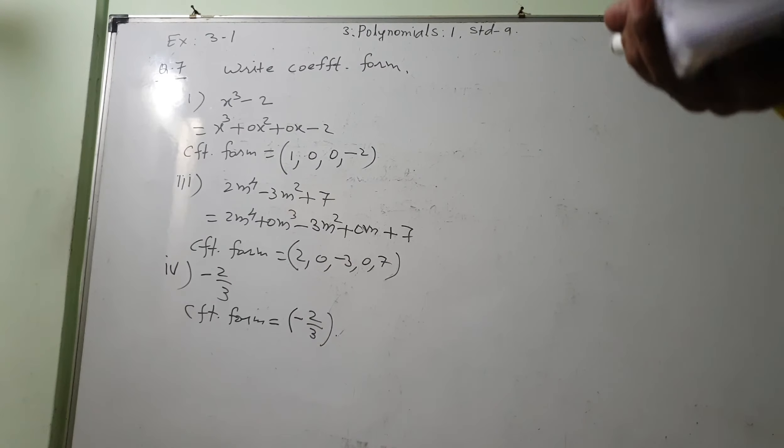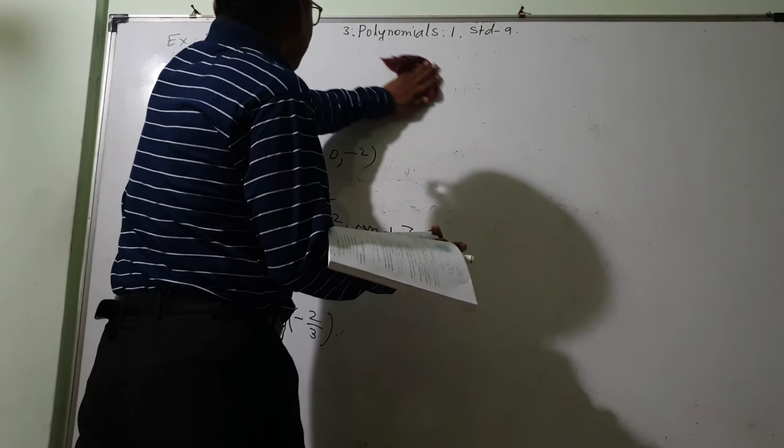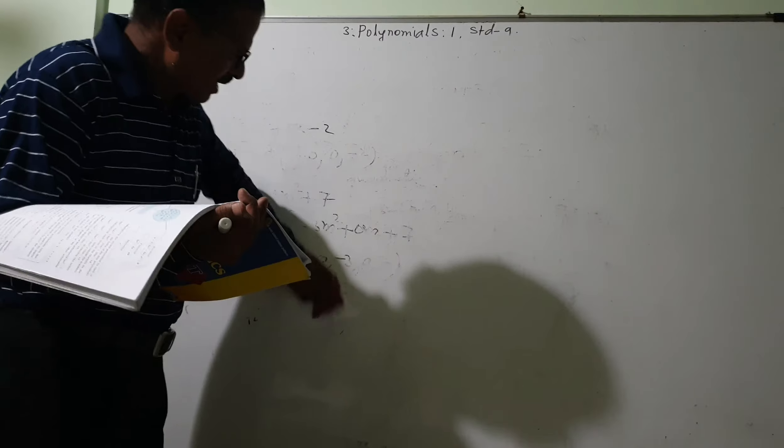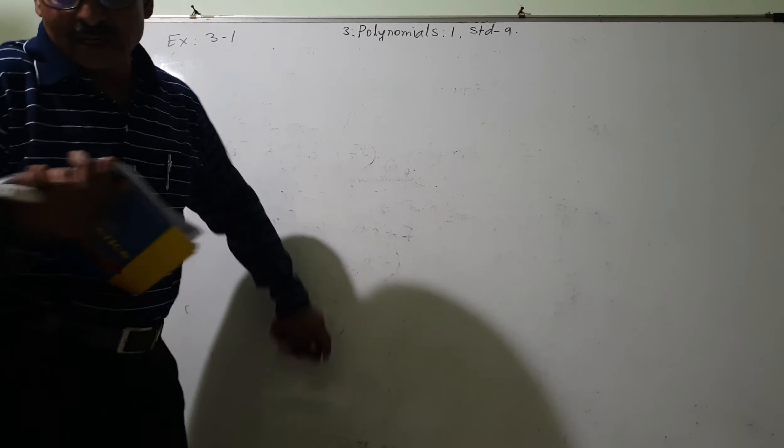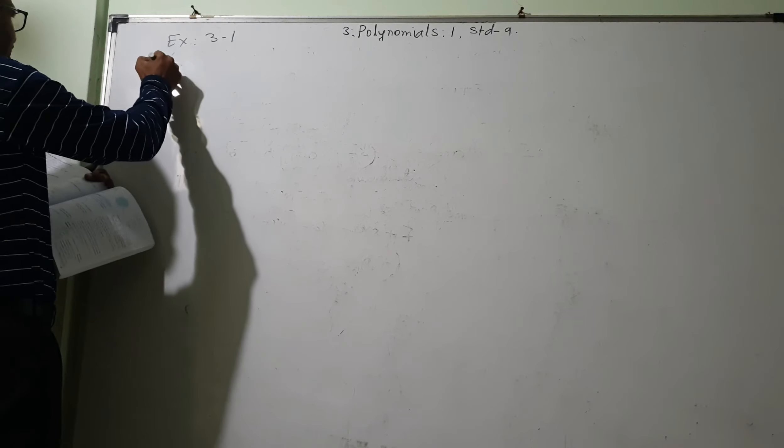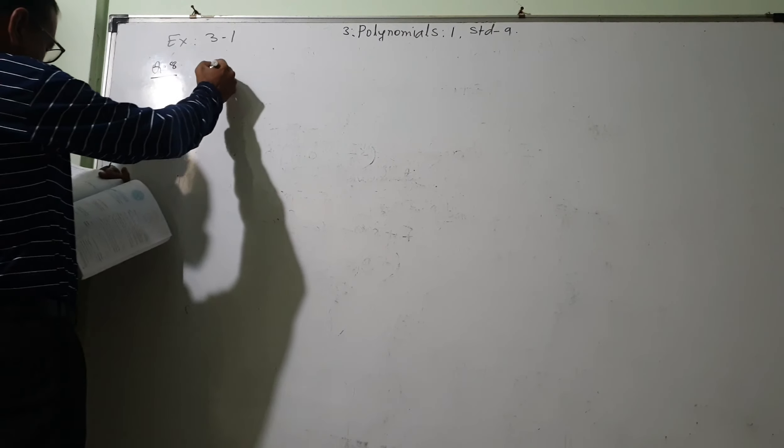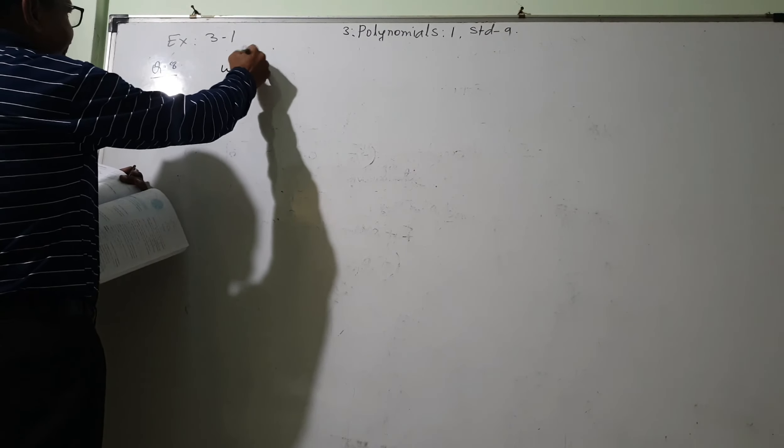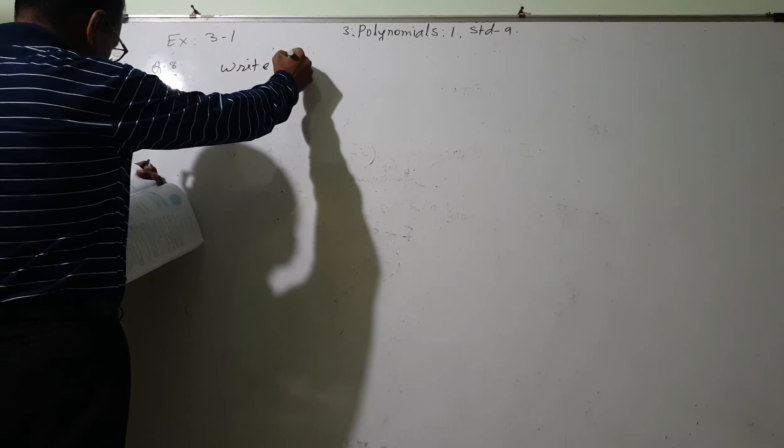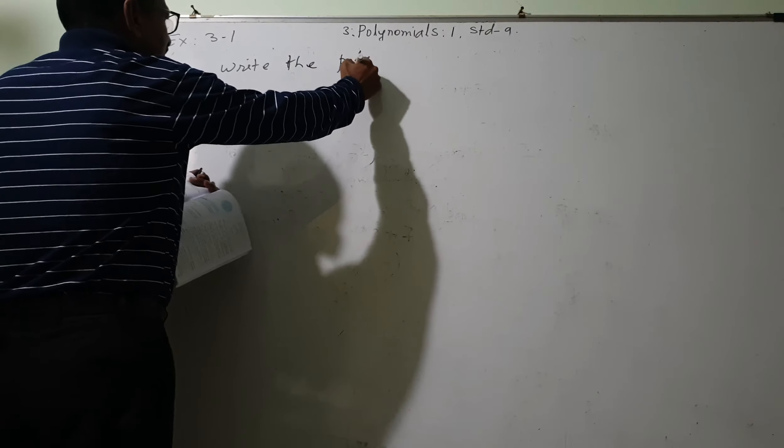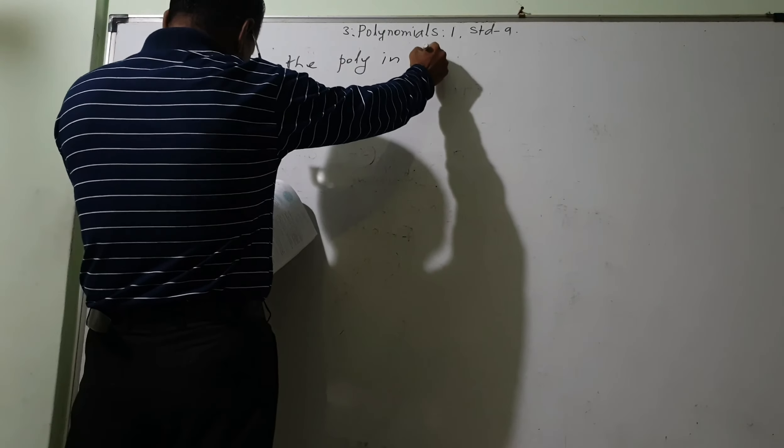Okay, let me see whether I can take question 8. That is also an important question. We cannot leave it. In the subsequent exercises those are essential. And there we will stop. Question 8: write the polynomials in standard form.